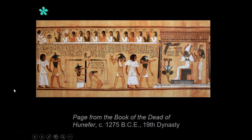Here is the scroll in its entirety. Hunefer and his wife Nasha lived during the 19th dynasty, around 1310 BCE. He was a royal scribe — his title was 'scribe of divine offerings.' He was also overseer of royal cattle and steward of King Seti I. These titles indicate that he held prominent administrative offices close to the king. The location of his tomb is not known, but he may have been buried at Memphis. This papyrus scroll was found inside an Osiris figure and is characterized by its good state of preservation.